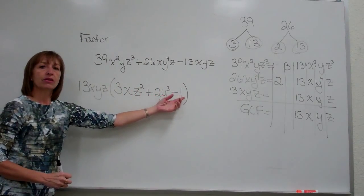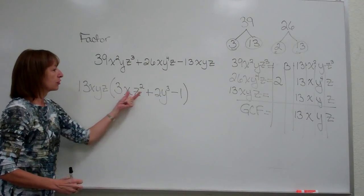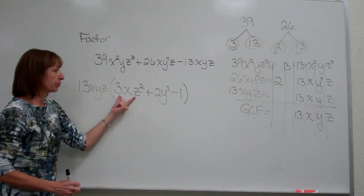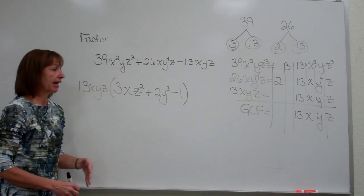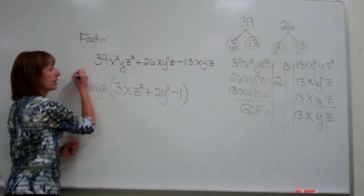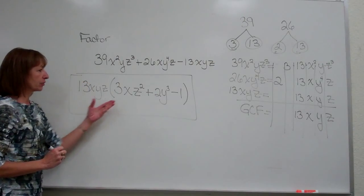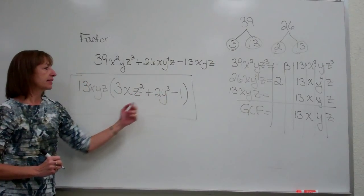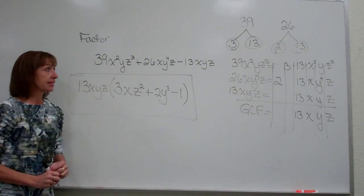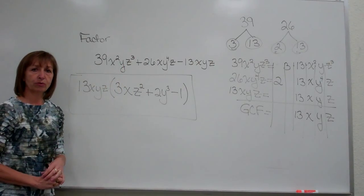Now I look inside the parentheses. It has three terms, but it doesn't have the right mixture of variable factors in there that would allow me to factor it any further. So this factoring out the greatest common factor with what we have left inside is the final factorization of our original polynomial.